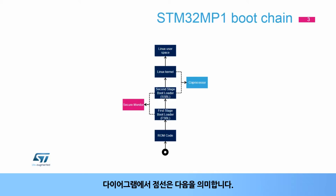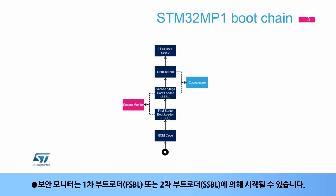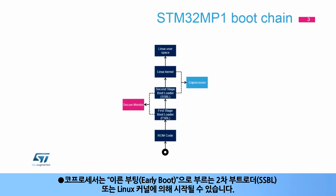The dotted lines in the diagram mean that the secure monitor can be started by the first stage bootloader or the second stage bootloader. The co-processor can be started by the second stage bootloader, called Early Boot, or by the Linux kernel.